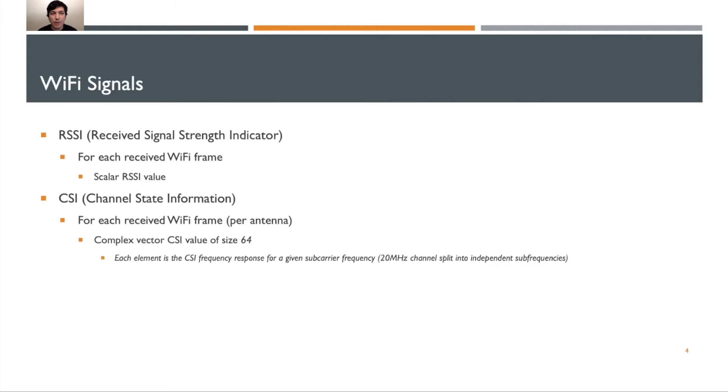When we talk about Wi-Fi, we need to think about what metrics of the signal we can actually use. The most common is the received signal strength indicator, RSSI. For each received Wi-Fi frame, we get a single scalar RSSI value.